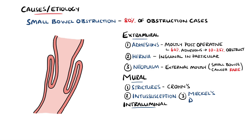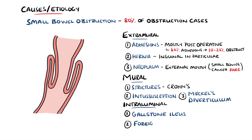Another mural cause is Meckel's diverticulum, and intussusception and Meckel's diverticulum are more common in children. Intraluminal causes include gallstone ileus, where a larger gallstone may pass into the intestine via a fistula between the gallbladder and the intestine. Ingested foreign bodies may also cause an intraluminal small bowel obstruction.